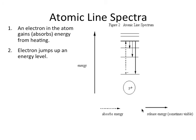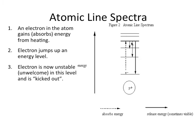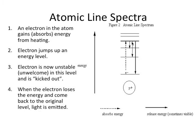So again, an electron in the atom absorbs energy, jumps up an energy level. The electron is unstable and it is kicked out. When that electron loses energy and it comes back to the original level, light is emitted, sometimes visible light.